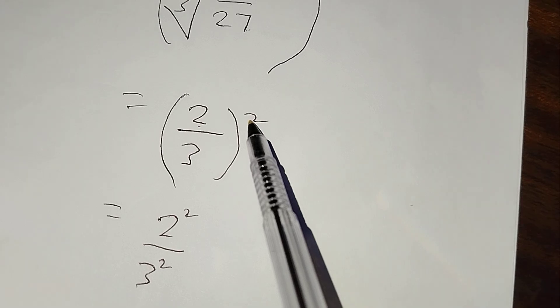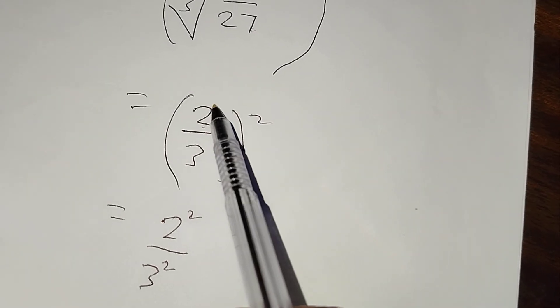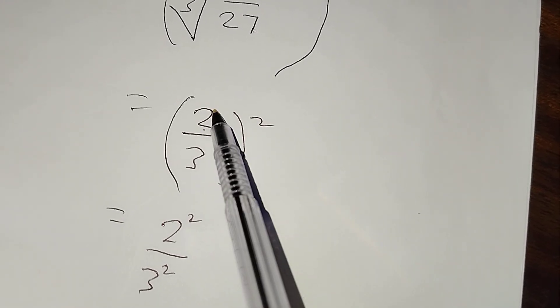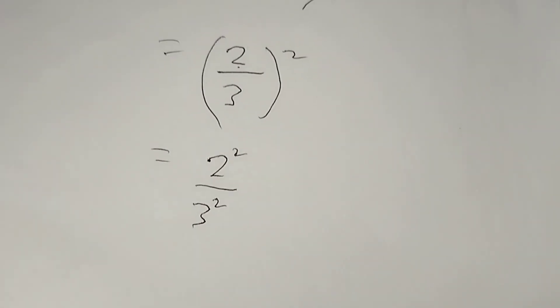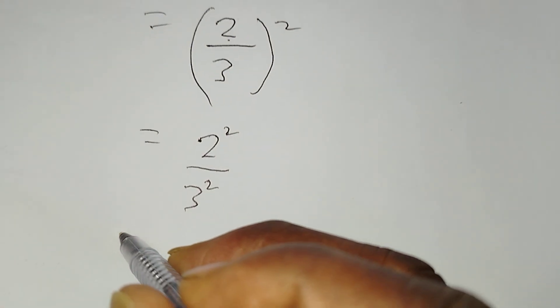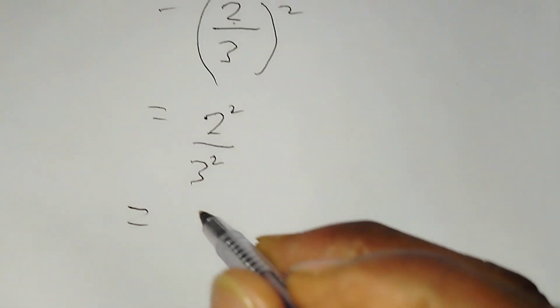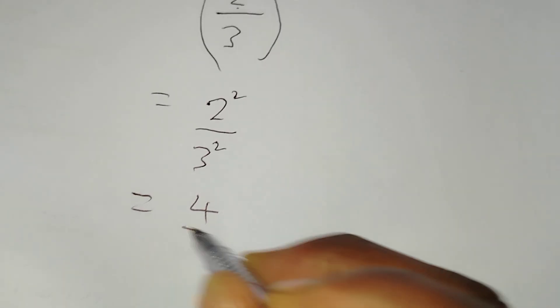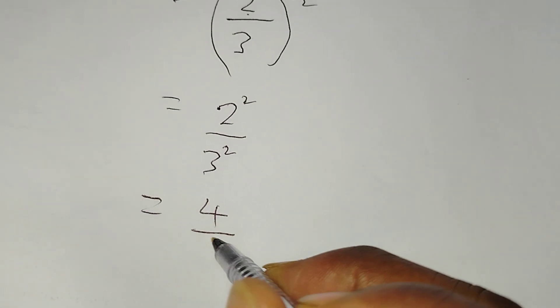Take note, if a power is like this it means it affects both, it has an effect on the numerator and also an effect on the denominator. So in this case it becomes 2 to the power 2 over 3 to the power 2. And 2 to the power 2 you know is 4, 3 to the power 2 is 3 times 3 which is 9.